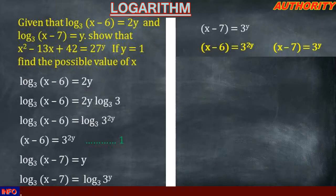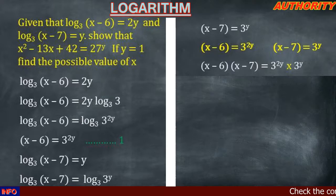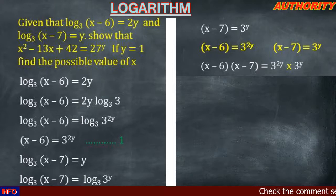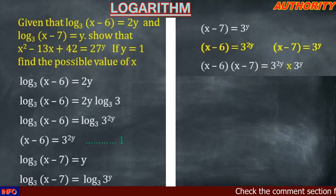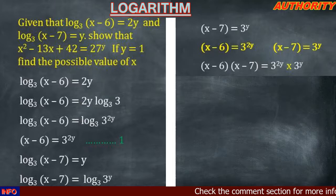Multiplying equation 1 and equation 2 together: (x−6)(x−7) equals 3^(2y) times 3^y. Since we have the same base, we add the exponents: 2y plus y gives us 3y, so the right-hand side becomes 3 raised to power 3y.